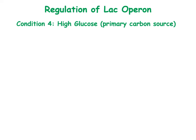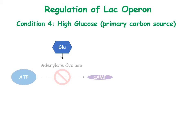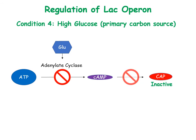Condition 4: When glucose is high, since glucose is the primary carbon source of the cell, the cell will first utilize glucose and turns down the LAC operon. This is done by inhibiting the enzyme adenylate cyclase. As a result, cyclic AMP is not synthesized to activate CAP protein, leading to weak transcription of the LAC operon.